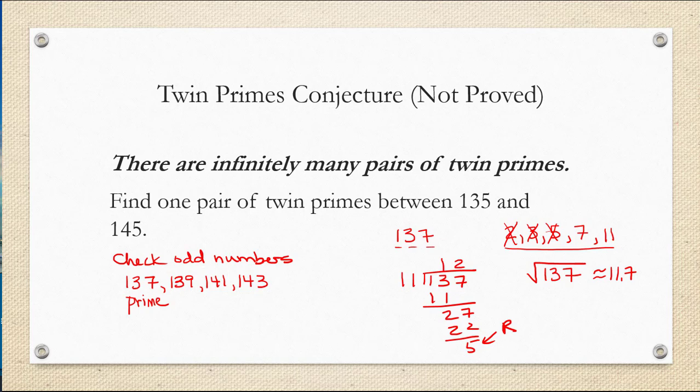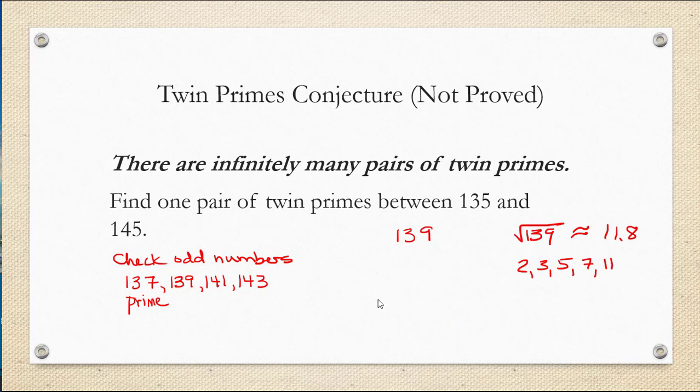Now let's check 139. If 139 is prime, then we have found our pair of twin primes. The square root of 139 is 11.8. So using that as a guide, we know we only have to check the primes from 2 through 11.